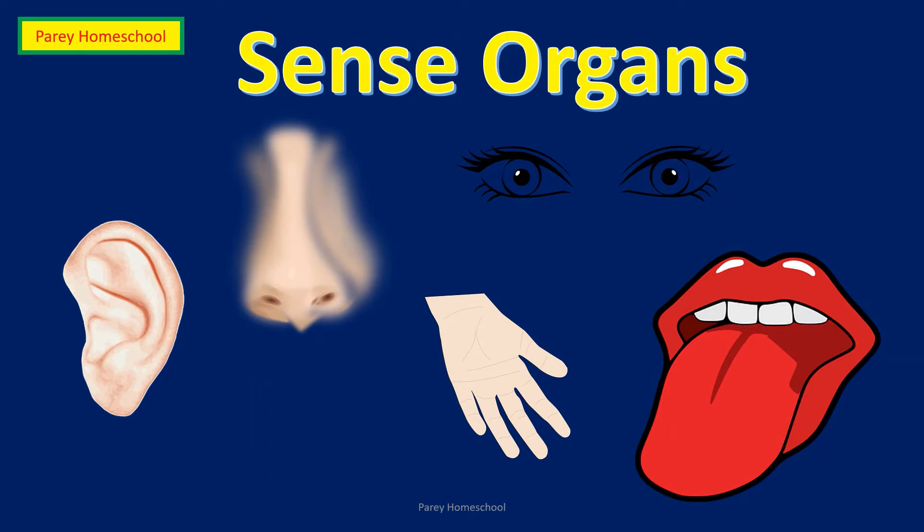Sense organs. Do you remember sense organs? In the previous chapter, we have already learnt a lot about sense organs: eyes, nose, ear, skin and tongue. These are the five sense organs. All the sense organs are external parts of the body, and so we can see them.